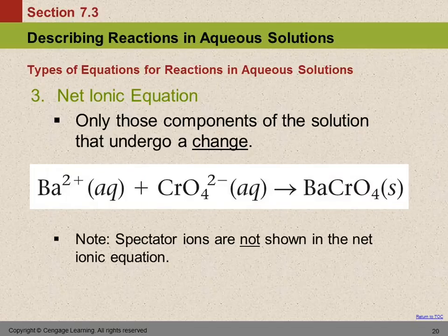They didn't get changed. But the barium and the chromate were changed. They became this couple, this solid. So in the net ionic equation, we don't show the spectator ions.